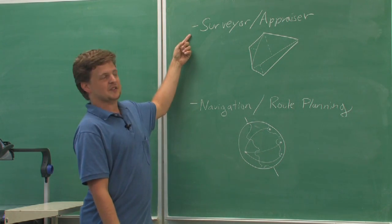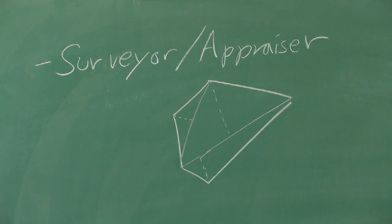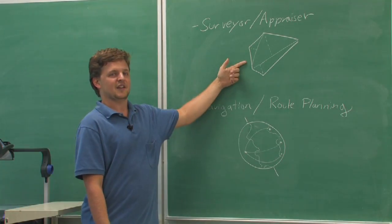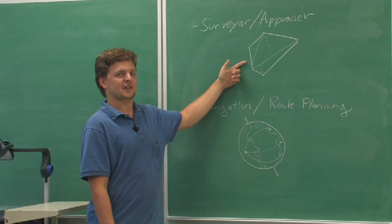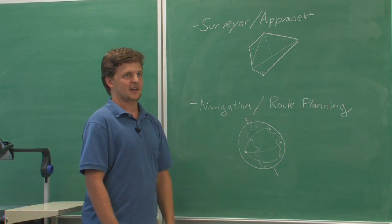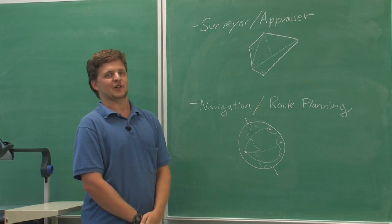The first job I list is surveyor or appraiser. This becomes very important when you're looking at a piece of property with an irregular shape. You need to be able to chop it into triangles and then calculate using some angles that you can measure how much land there is.